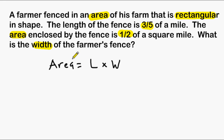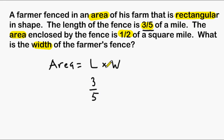So what we can do is take any known values in our problem and substitute them inside the formula. The problem says that the length of the fence is three-fifths of a mile, so we can substitute the variable length with three-fifths. The problem also says that the area enclosed by the fence is one-half of a square mile, so we must substitute one-half in for the area.